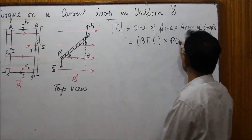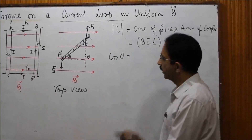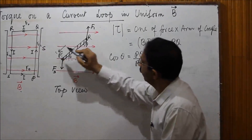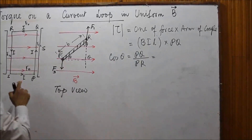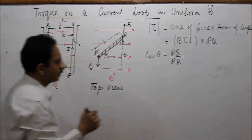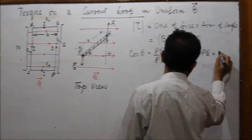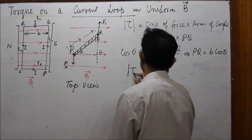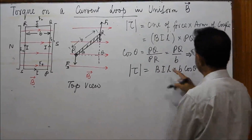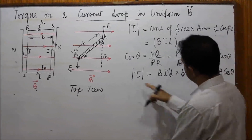The torque magnitude equals BIA cosθ, where θ is the angle between the plane of the loop and the magnetic lines of force. However, it is more suitable to express this in terms of φ — the angle between the direction of the area vector (normal to the loop) and the magnetic field B. Since the area vector is perpendicular to the plane, θ + φ = 90°, so θ = 90° − φ.